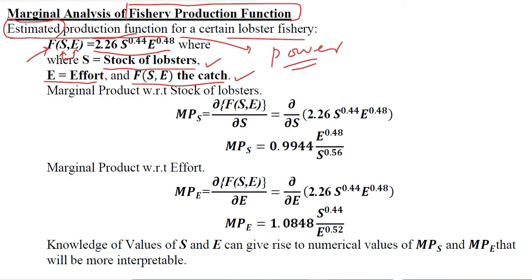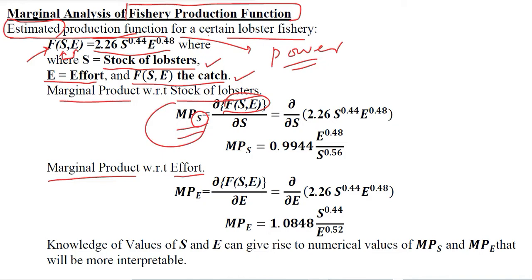Now we can calculate the marginal product of these two inputs — the marginal product with respect to stock of the lobsters, and the marginal product with respect to the effort that we give in this fishery production unit. For marginal product, we know that we have to differentiate the given function with respect to the variable. Here we have two independent variables: S and E.